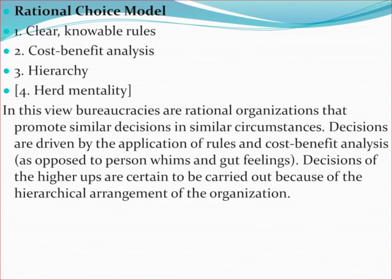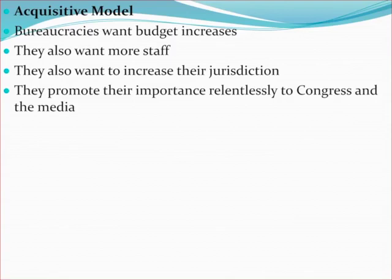Cost-benefit analysis and hierarchy also seem to be present. If you look at the surface of bureaucratic organizations, this model seems very appealing — almost the end-all and be-all of understanding what bureaucracies are about. But if we dig a little deeper and become more skeptical, we arrive at the acquisitive model. This model sees bureaucracies as essentially selfish and self-aggrandizing. What they want, according to the acquisitive model, is more money, more staff, and an increased sphere of influence and jurisdiction. They promote their importance relentlessly to Congress and the media.